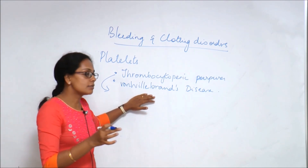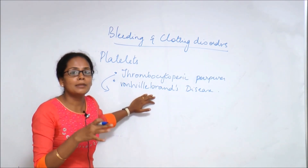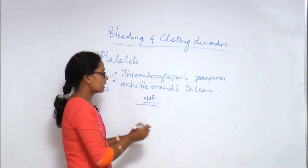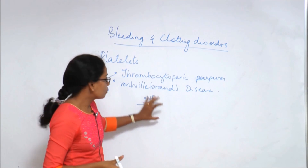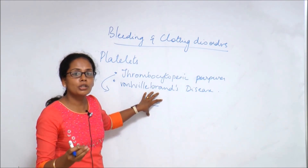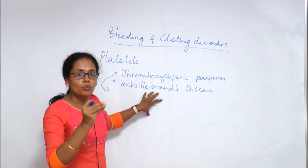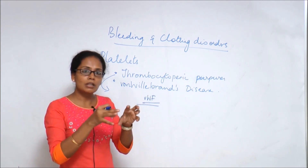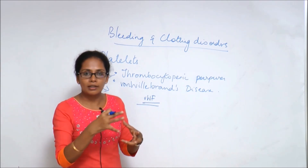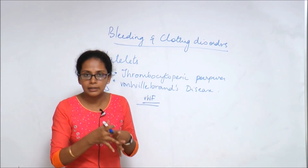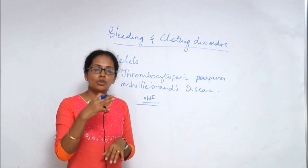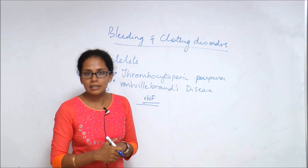Von Willebrand disease is because of the deficiency of von Willebrand factor. The person has no von Willebrand factor. Now why is von Willebrand factor needed? It is needed for the formation of the platelet plug — once the platelets are activated, this factor is needed for the platelet to bind to the collagen as well as with one another and form the platelet plug. So when this factor is absent, though the person has a normal platelet count, there is no platelet plug formation.